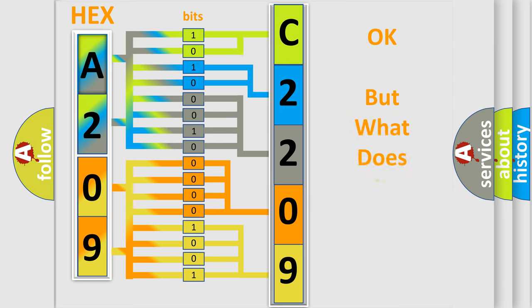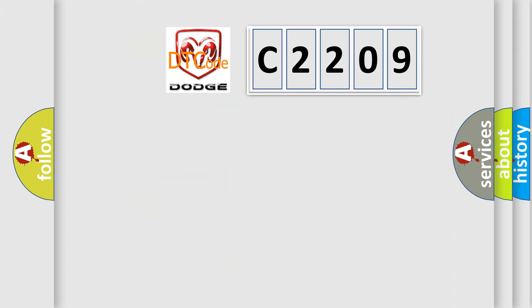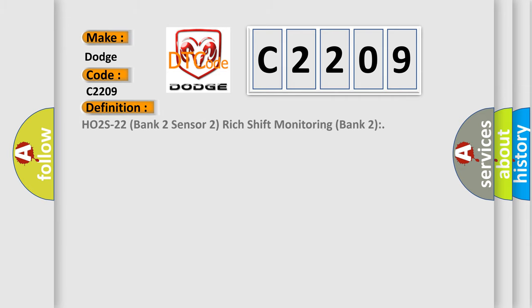We now know how the diagnostic tool translates the received information into a more comprehensible format. The number itself does not make sense if we cannot assign information about what it actually expresses. So, what does the diagnostic trouble code C2209 interpret specifically for Dodge car manufacturers? The basic definition is: HO2S22 Bank 2 Sensor 2 Rich Shift Monitoring Bank 2.